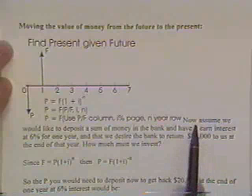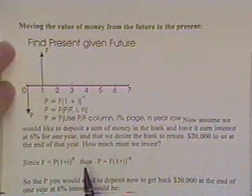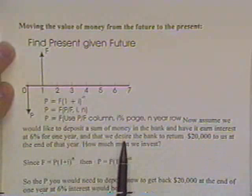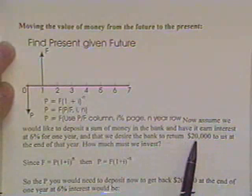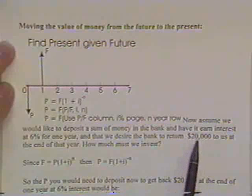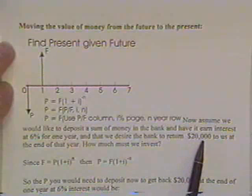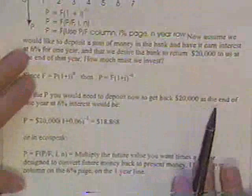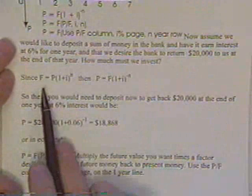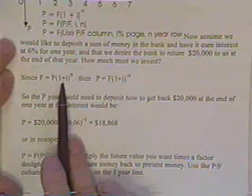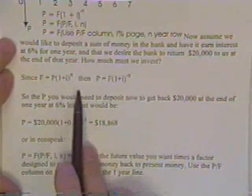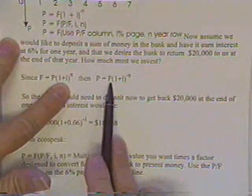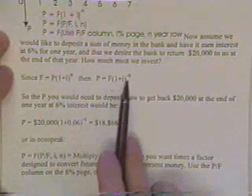For example, let's assume that we'd like to deposit some amount of money in the bank, have it earn interest at six percent for one year, and at that time we'd like for the bank to give us twenty thousand dollars because that's how much we need for the car. How much must we invest now in order to have the bank return to us the money we desire? Since F is equal to P times (1 + i) to the n, then obviously P can be found by dividing by this factor.